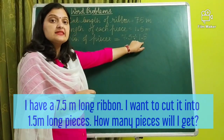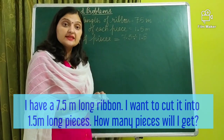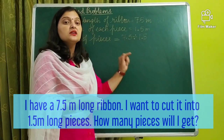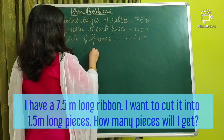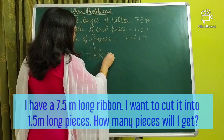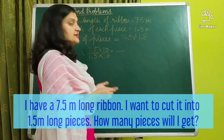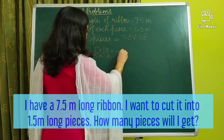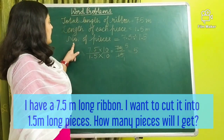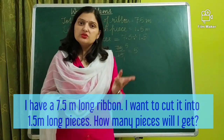Total length of ribbon is 7.5 meters, length of each piece is 1.5 meters. To get the number of pieces, we divide 7.5 by 1.5. Our divisor is a decimal number, so whenever the divisor is a decimal we write the division as a fraction. So 7.5 upon 1.5, multiply by 10 to get 75 over 15. Since 15 × 5 = 75, we will get 5 pieces.